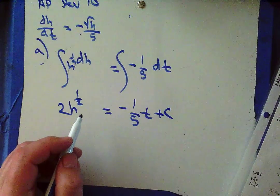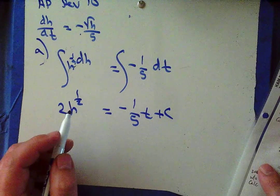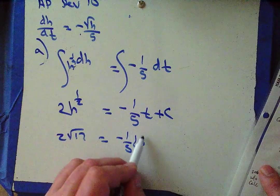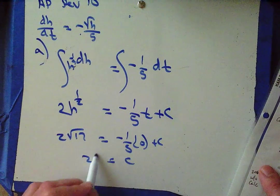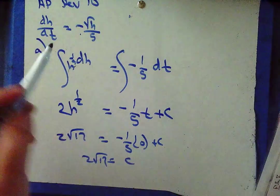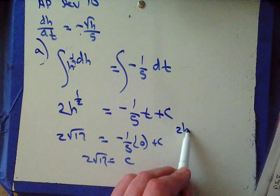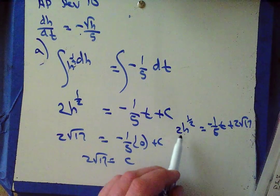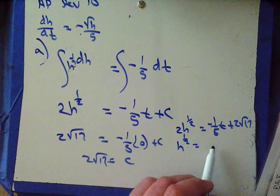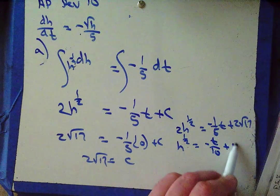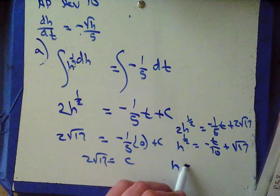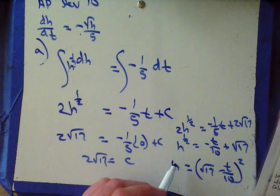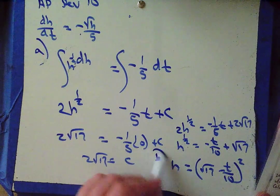Integrating gives 2h^(1/2) on the left and negative 1/5 t plus C on the right. We know that at time equal to 0, h is 17. So I've got 2√17 equals negative 1/5 times 0 plus C, so C equals 2√17. Then we have 2h^(1/2) equals negative 1/5 t plus 2√17. Dividing everywhere by 2: h^(1/2) equals negative t/10 plus √17. Squaring both sides: h equals (√17 minus t/10)². That's our particular solution h(t), and that's part b.